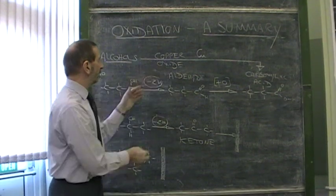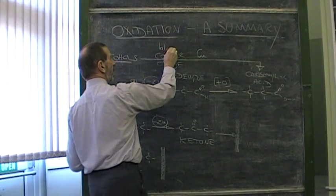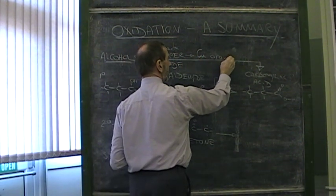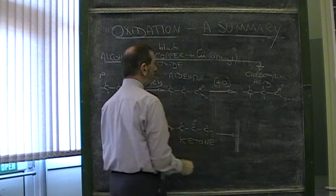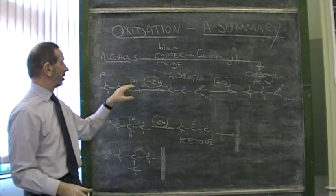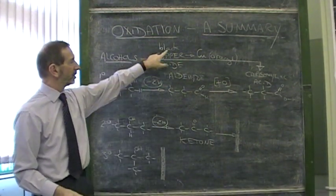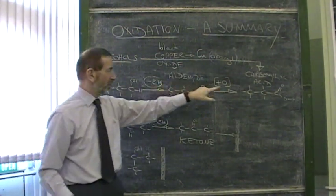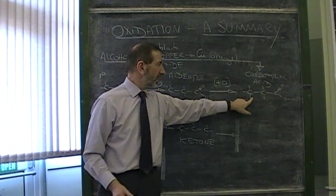You see copper oxide, which starts off as a black powder, turning to copper, which of course is an orange colored metal. So when you add the copper oxide to the alcohol and you see a black powder turning to orange, it means that this must have lost oxygen, therefore the alcohol has gained oxygen, therefore the alcohol has been oxidized.